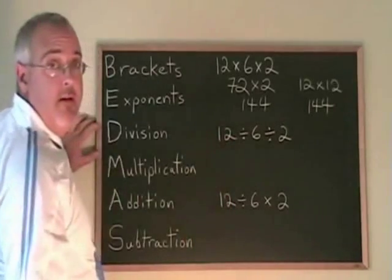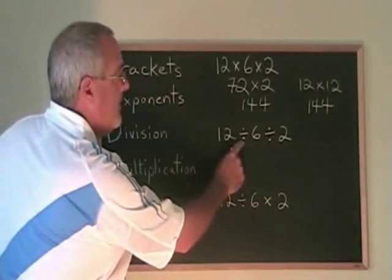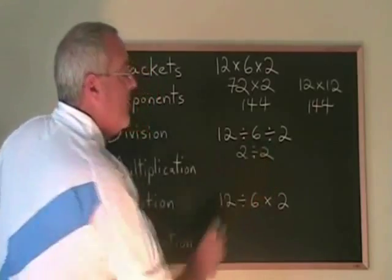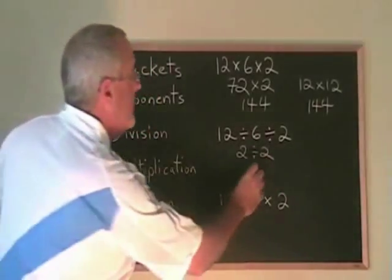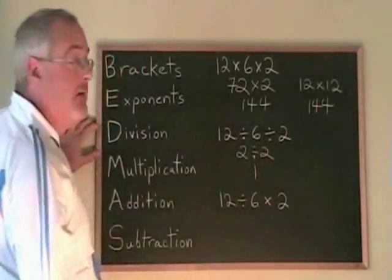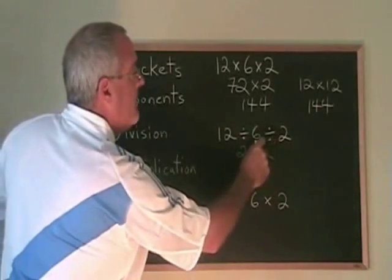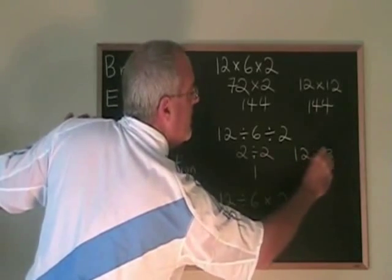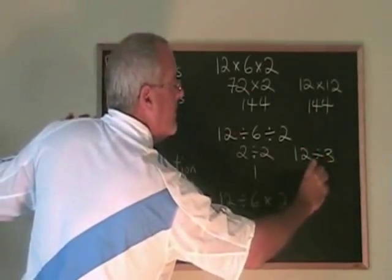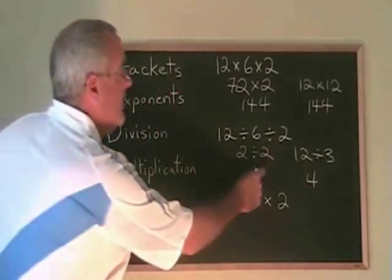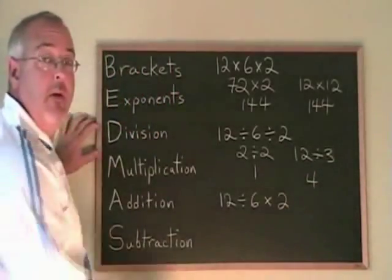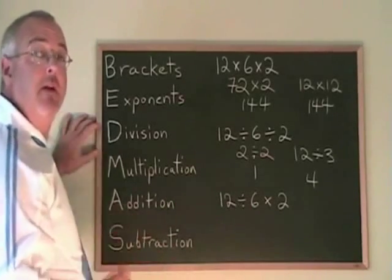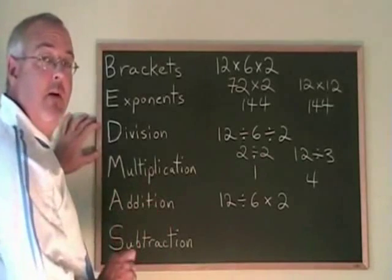What about division signs? If we do the first one first, 12 divided by 6 is 2, and 2 divided by 2 is 1. If we do the second division first, 6 divided by 2 is 3, so we have 12 divided by 3, which is 4. We're getting two different answers, just like with two minus signs. So division signs, like minus signs, introduce something tricky, and we have to be careful how we apply our rule.